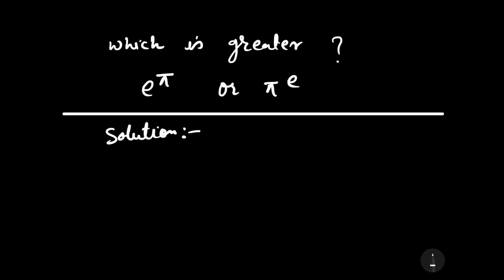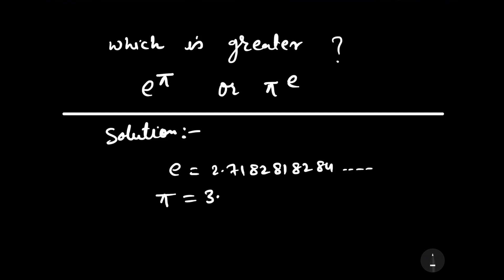Since the value of e is 2.7182818284... continuing to infinity, it is an irrational number. Pi is also an irrational number — its value is 3.1415926... with more digits beyond that. Both are irrational numbers, so you will not be able to solve it manually.